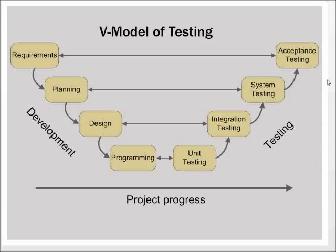Here is the traditional V model of testing. It more or less means that here are the fundamental phases of activity as defined, for example, by the waterfall process model approach: requirements gathering, planning work, design work, and programming work — basically all the development tasks.